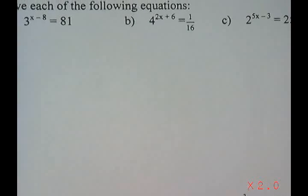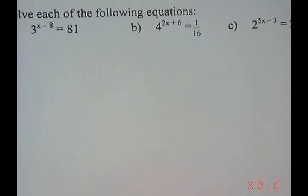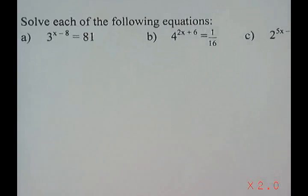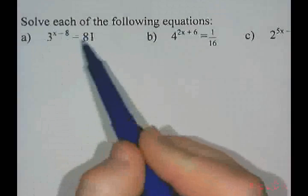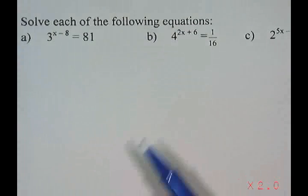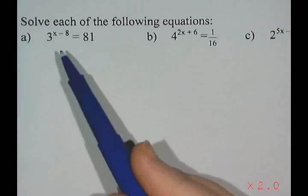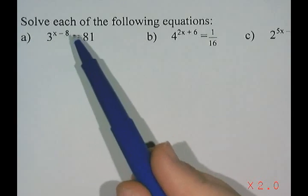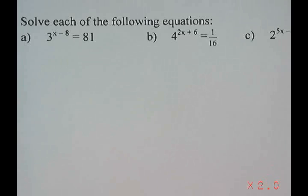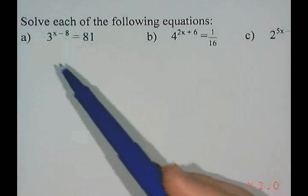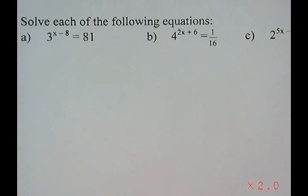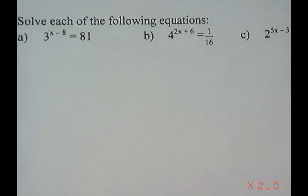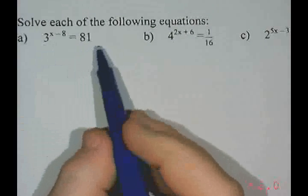The first one says solve each of the following equations. I know it's an equation because it has an equal sign in the middle — it's not just an expression. So I have 3 to the power of x minus 8 equals 81. Rule number one when solving an exponential equation is you want to write the powers as powers of the same base.